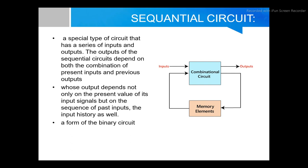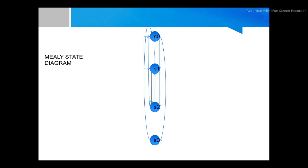Sequential circuits are a form of binary circuits. For our vending machine, there are two types of finite state machines: Mealy and Moore. We primarily use the Mealy machine. In the Mealy state diagram we have states S0, S1, S2, and S3. S0 represents zero cents, S1 represents 5 cents, S2 represents 10 cents, and S3 represents 15 cents.